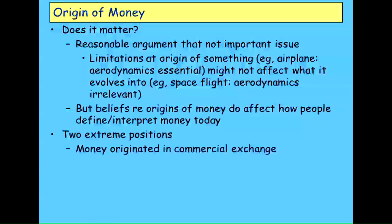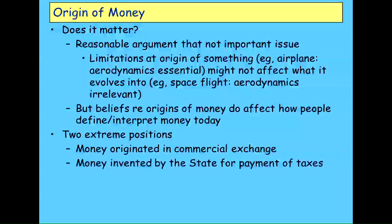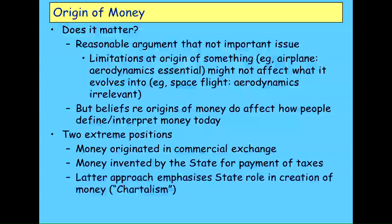There are two extreme positions: one is that money originated in commercial exchange; the other that it was invented by the state for payment of taxes — the chartalist case. Graeber, as a professor of anthropology, and Michael Hudson, who did a PhD in archaeology before economics, argue it was a combined mixture of commercial and control systems that gave rise to money. In fact, Graeber argues that a major part of the evolution of money was to get a means of measuring levels of punishment for crimes — coming out of the legal system. That has nothing to do with either extreme in the post-Keynesian discussion.